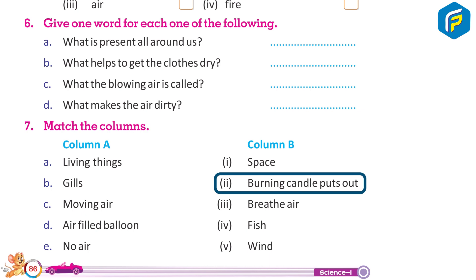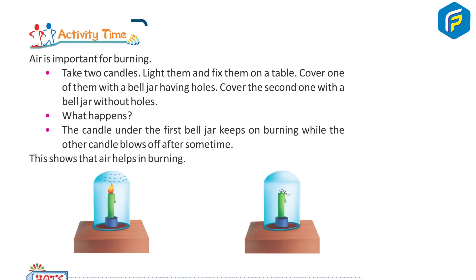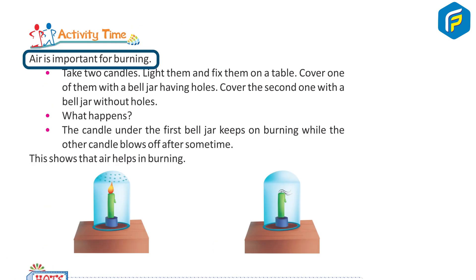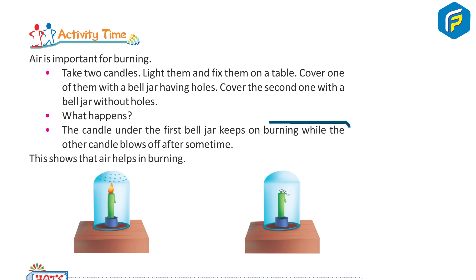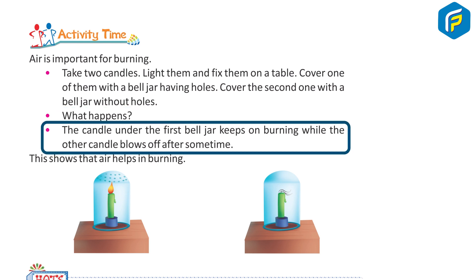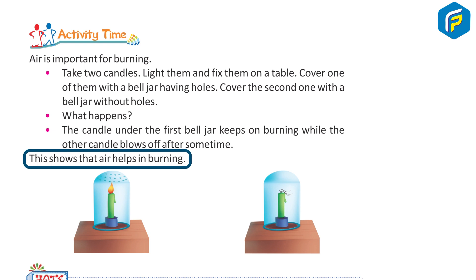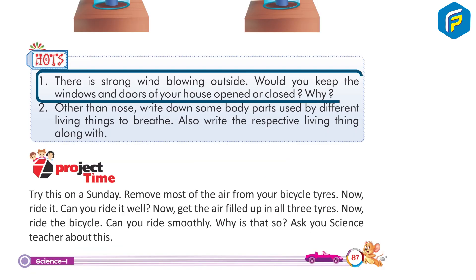Activity time — Air is important for burning. Take two candles, light them and fix them on a table. Cover one with a bell jar having holes, cover the second with a bell jar without holes. The candle under the first bell jar keeps on burning while the other candle goes out after some time. This shows that air helps in burning.